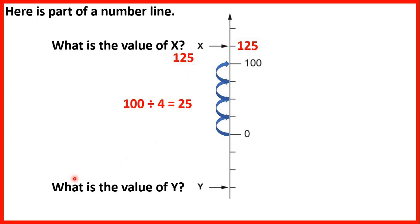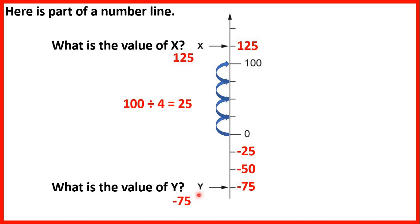Now we need to find the value of y. We can see that on the number line y is below 0. So if we go back in 25s from 0, we'll have minus 25, minus 50, and then minus 75 for point y.